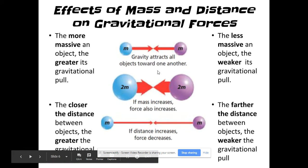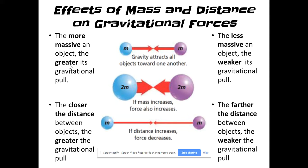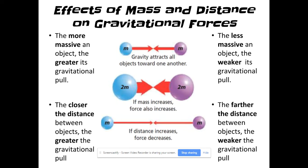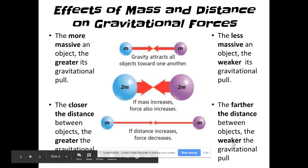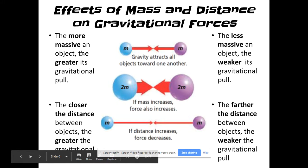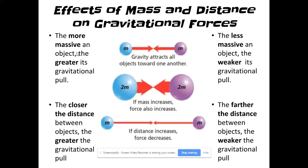The basic principles of gravity: the more massive an object is, the greater its gravitational pull — such as the Sun. Objects that are closer have a greater gravitational pull, such as the Moon on Earth's tides. Less massive objects have a weaker gravitational pull — I don't exert a very strong gravitational pull on other objects because I simply don't have a very large mass, and neither does any person. The farther objects are from one another, the weaker their gravitational attraction — planets like Neptune don't exhibit a great force on Earth simply because they're far away.